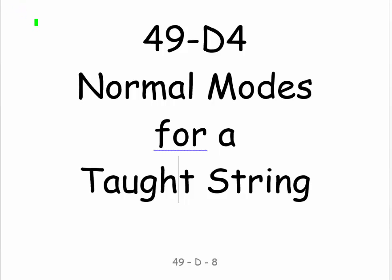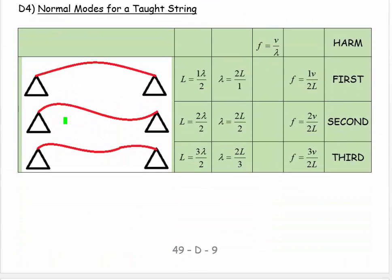Welcome, this is 49-D-4: Normal Modes for a Taut String. That means a tight string. Here I have a diagram showing the first three normal modes, and if you want to know how to draw these things...